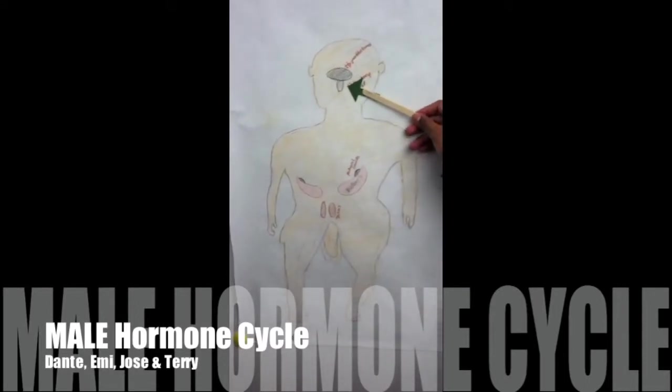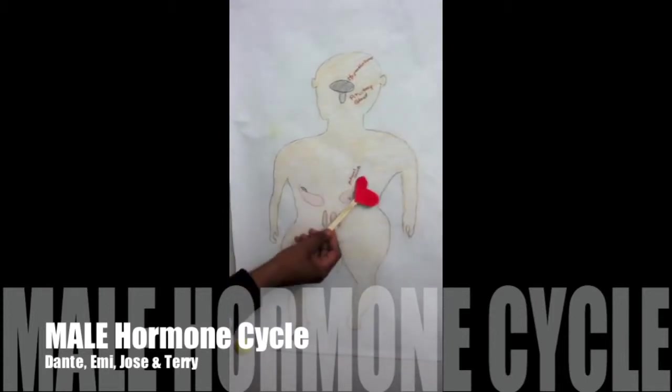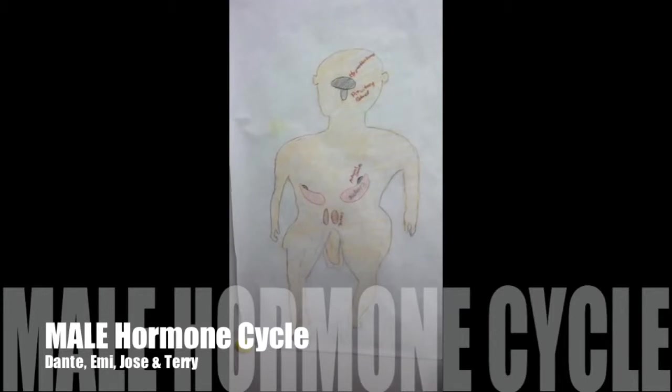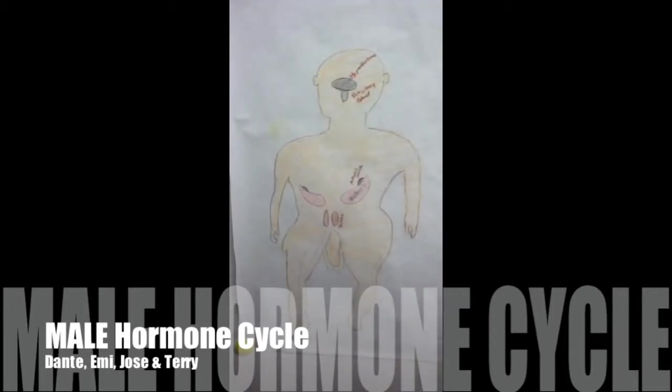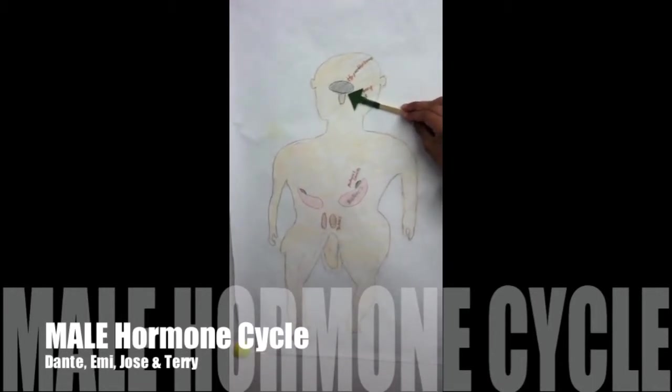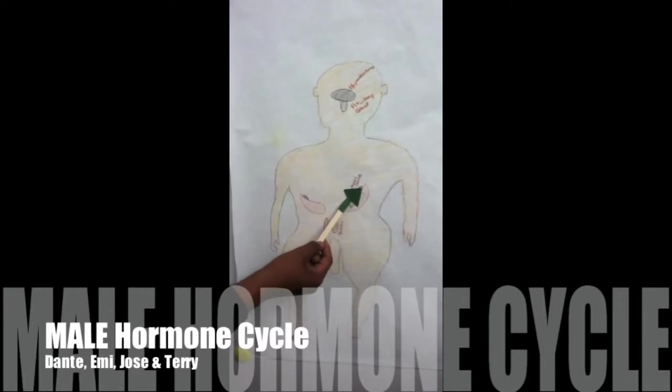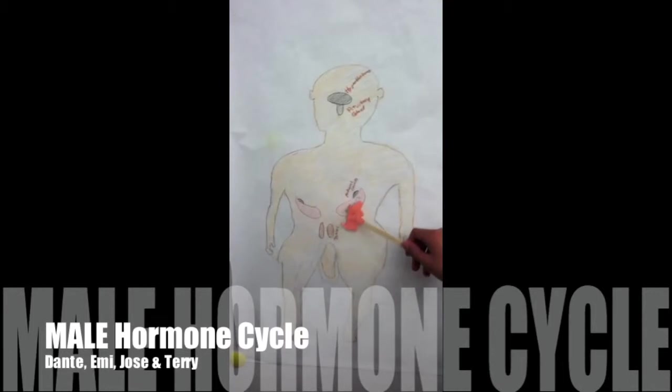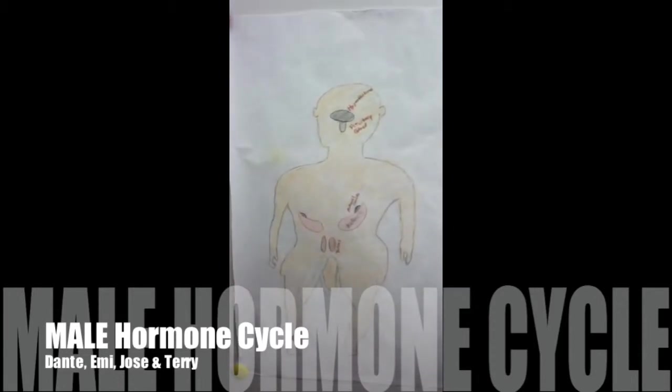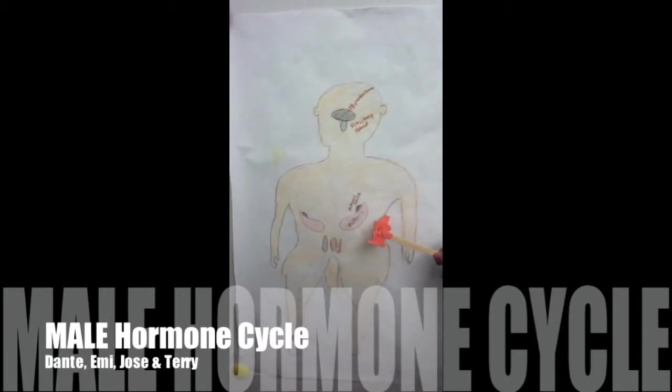HGH, go build bone and tissue. Bones and tissues, it's time to grow. Thanks, HGH, we're growing now. Adrenal glands, produce testosterone. Testosterone, go build muscle. I'm going to go build muscle. We're growing now. Oops, testosterone — I think I've made too much. Send a signal. Oops, there's too much of me. Hypothalamus and pituitary, slow down your production of hormones.